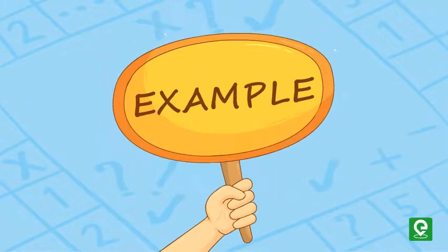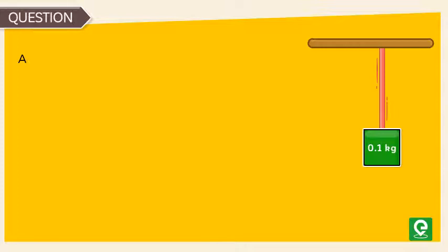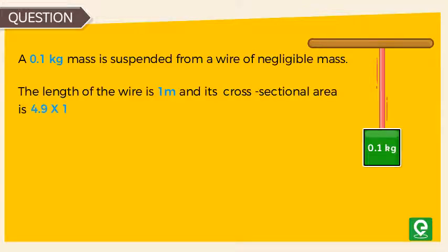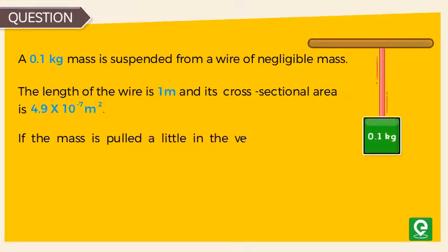Let's solve an example to understand this concept better. Question: A 0.1 kg mass is suspended from a wire of negligible mass. The length of the wire is 1 meter and its cross-sectional area is 4.9 × 10^-7 meter square.